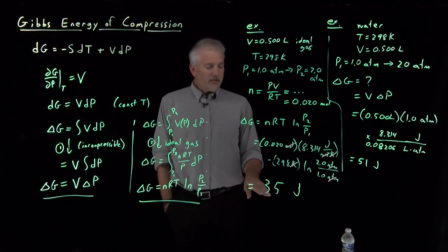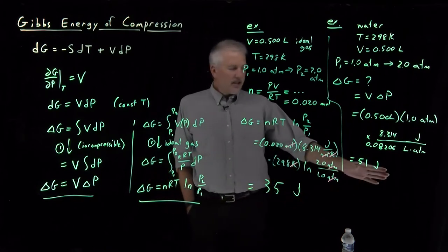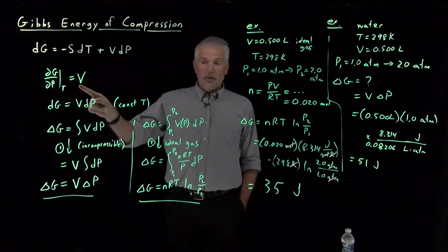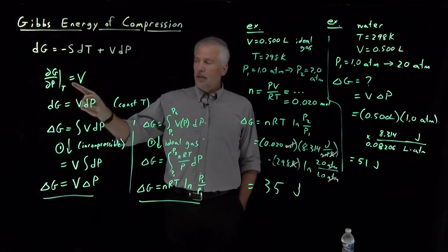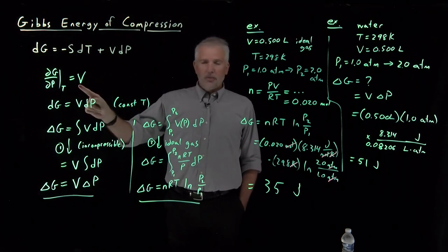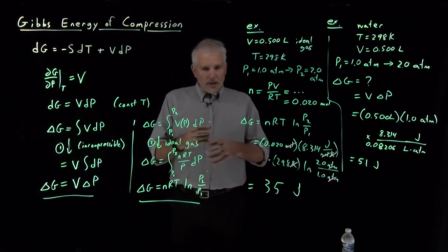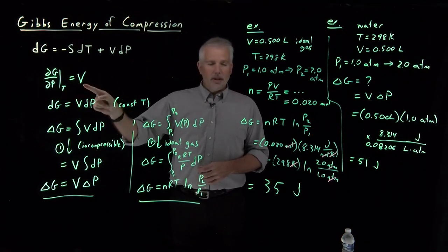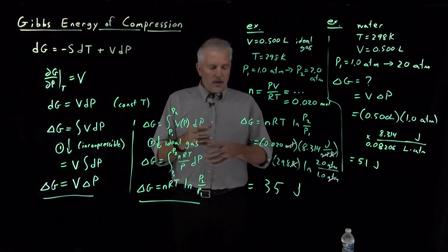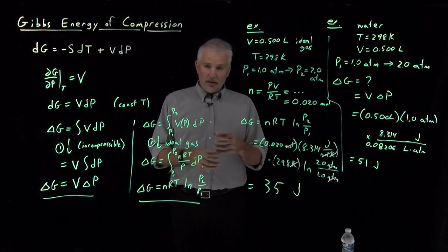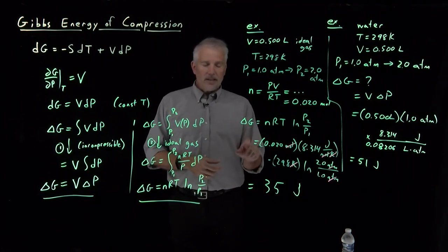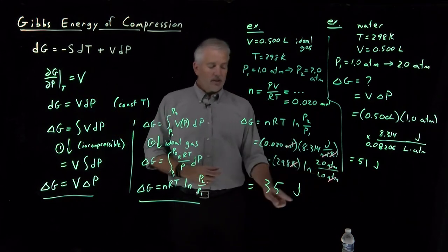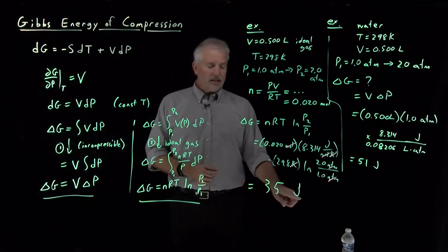One interesting question we can ask is, why does the free energy change by less when I compress the gas than when I compress the liquid? One way to think about that answer is, the rate at which the free energy is changing, the free energy goes up. Volume is positive. So the free energy is always going to go up when I increase the pressure. The rate at which the free energy is going up is the volume of the substance. For the liquid, the volume was always the same. I could squeeze harder and harder. Every additional atmosphere of pressure I add increases the free energy by the same amount. But for the gas, when I increase the pressure, the volume keeps shrinking. So the fact that the gas has shrunk, that its volume has decreased as I began squeezing on it, means the free energy starts rising less and less because the volume is smaller. So the reason the free energy goes up less for the gas than for the liquid is because the gas actually does shrink, can be compressed as I exert pressure on it.